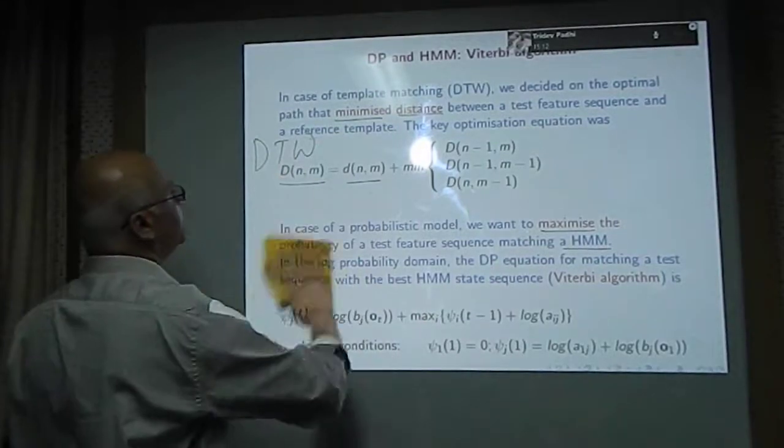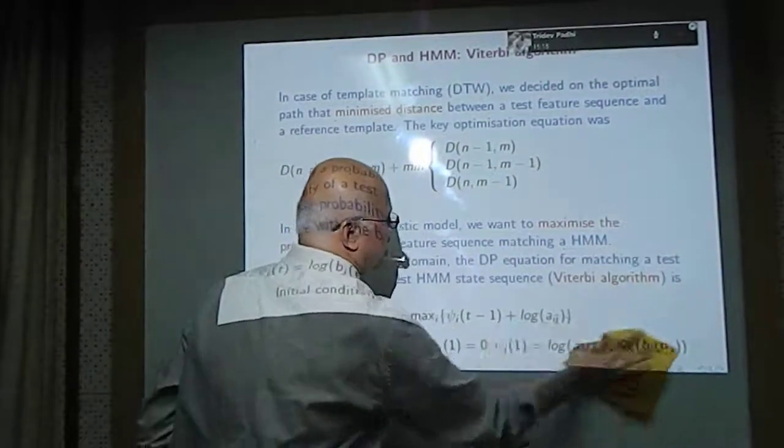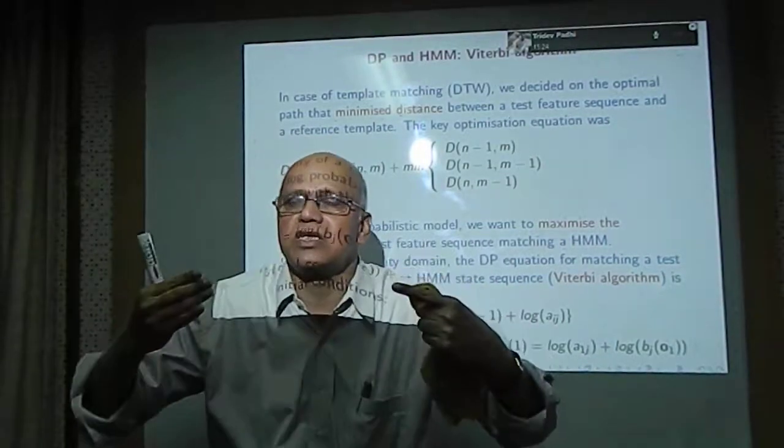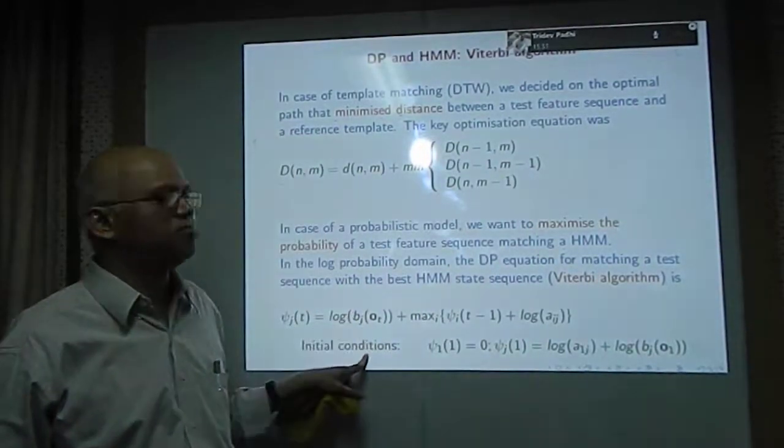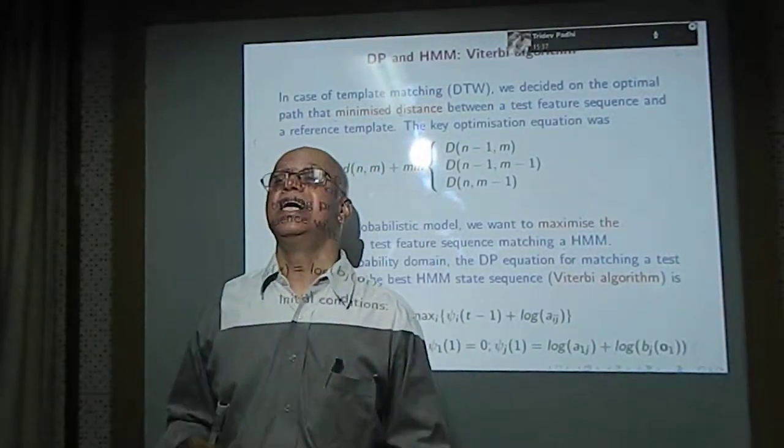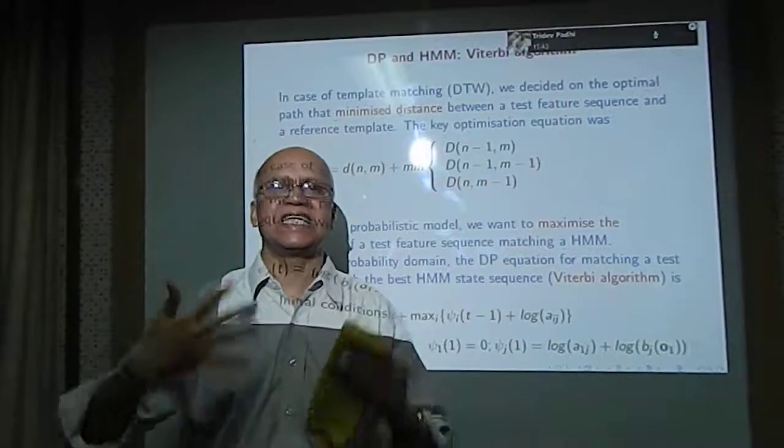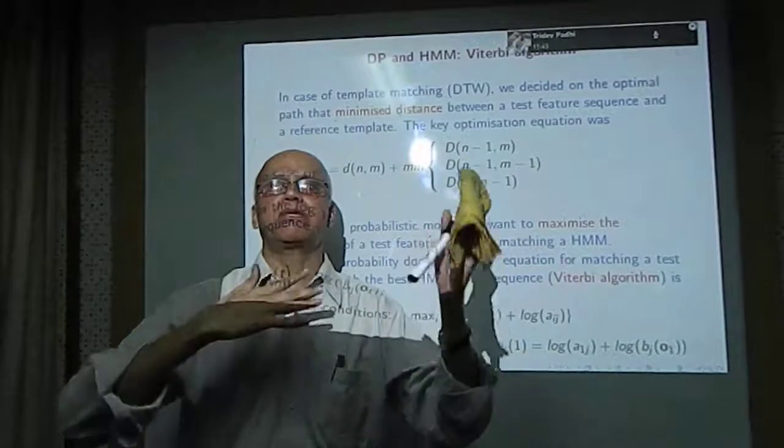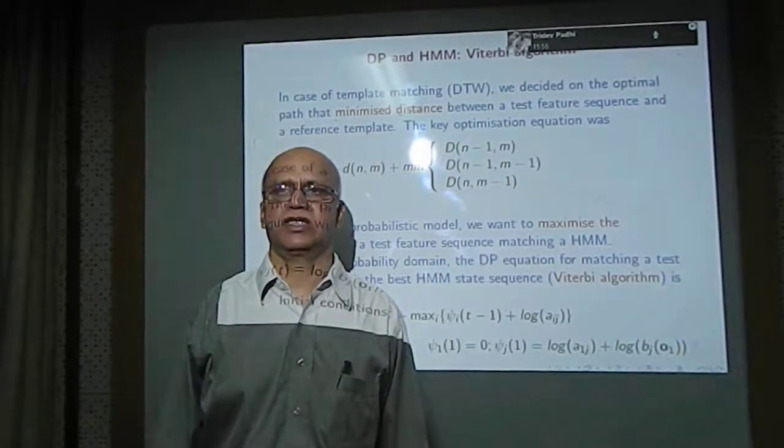I want us to end this talk by remembering that the same technique, dynamic programming, is used when you want to recognize a test feature using the template matching method, that is DTW, or using a probabilistic model, that is HMM, or doing spell checking as we saw earlier, or matching DNA sequences which is coded in terms of four letters. In all these cases, the technique that is used is called dynamic programming. It enables us to find the best match, best alignment between two sequences of unequal lengths.